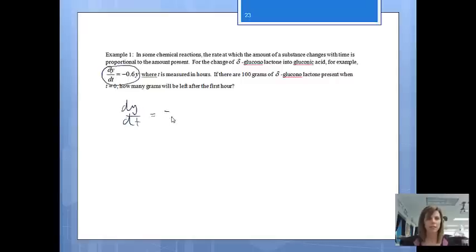dy/dt equals negative 0.6y. I'm going to put a 1 underneath, cross multiply. So I'll get 1 dy equals negative 0.6y dt. I need my y's on the same side, so I'm just going to divide by y. We're not going to do anything with the negative 0.6. So I'm now going to have dy over y equals negative 0.6 dt.